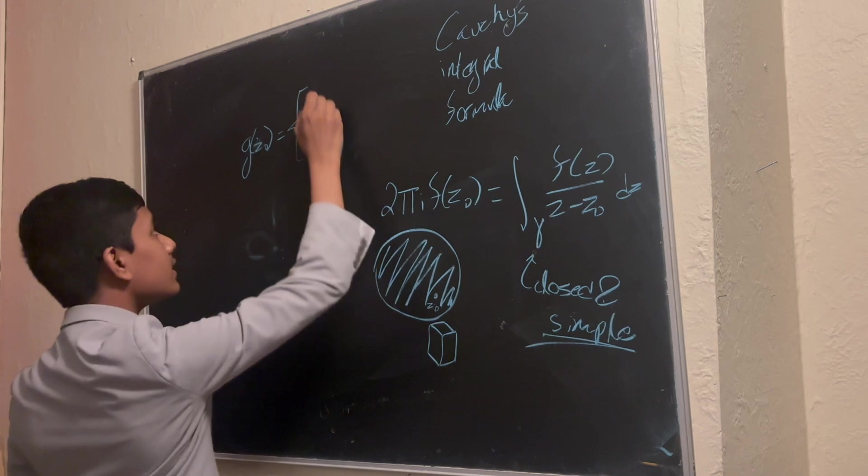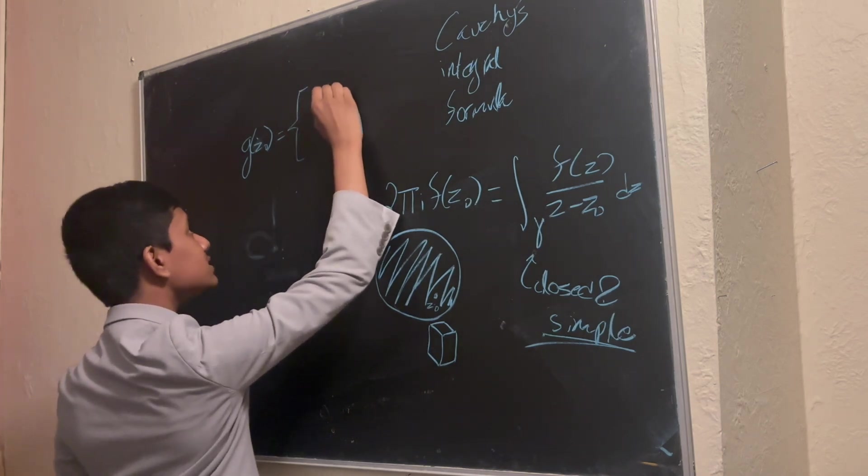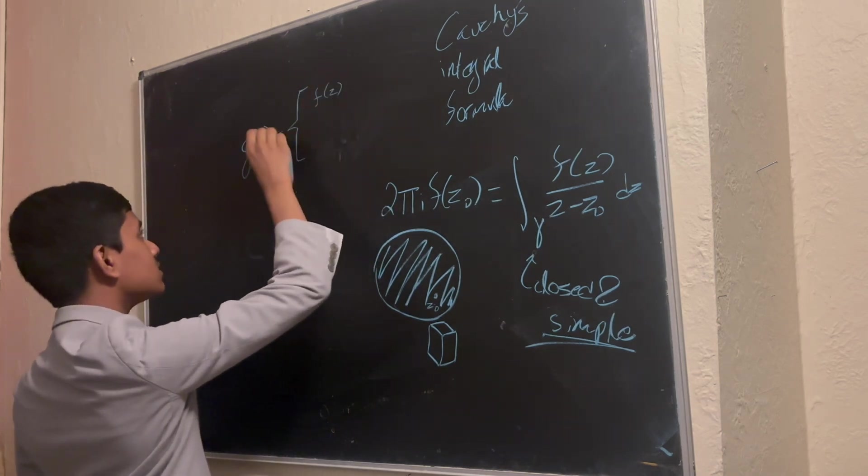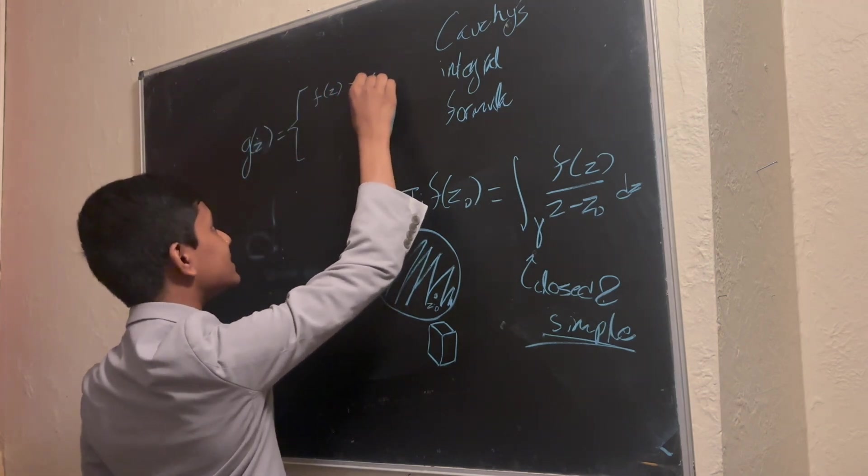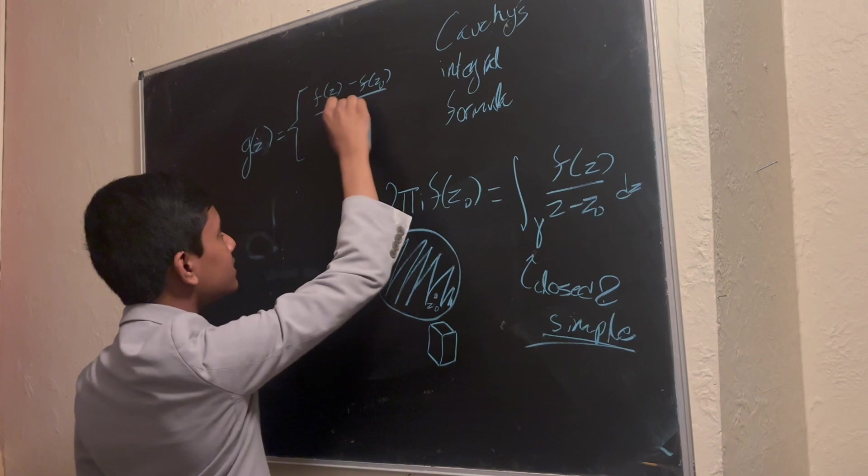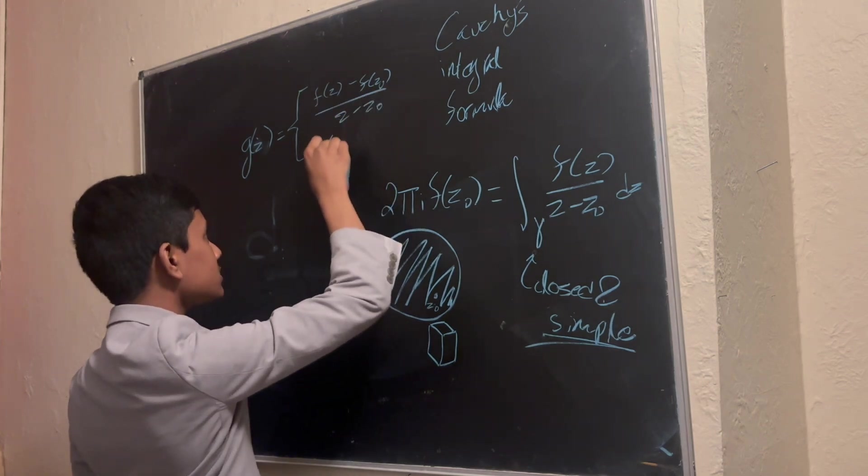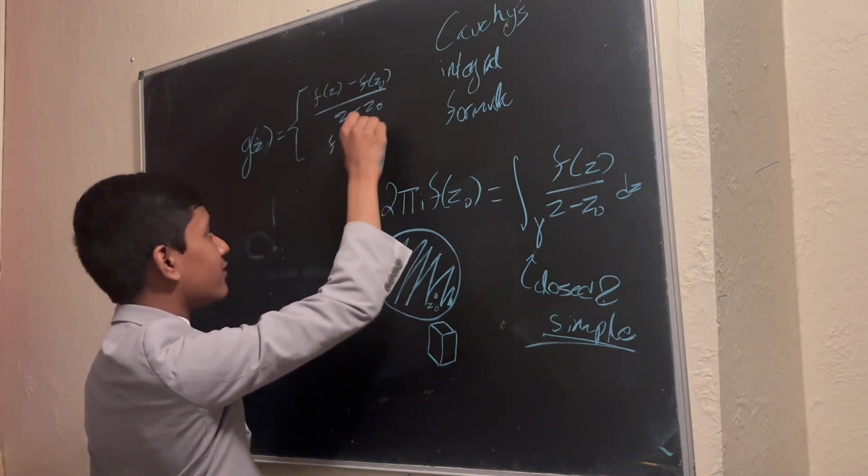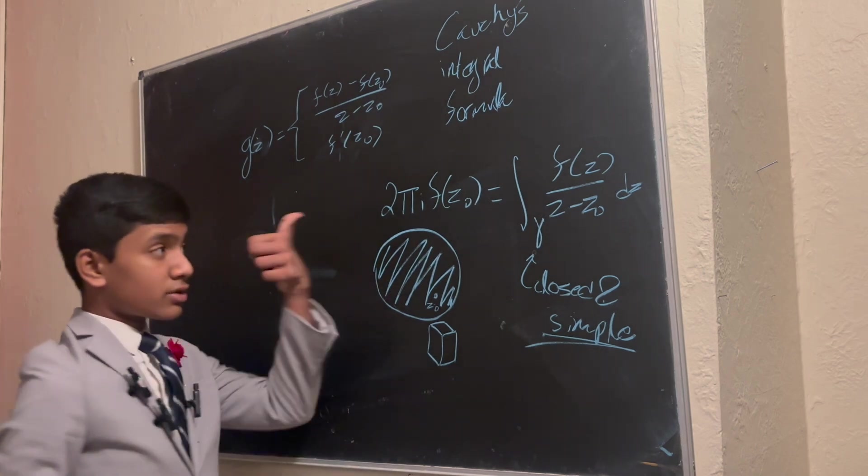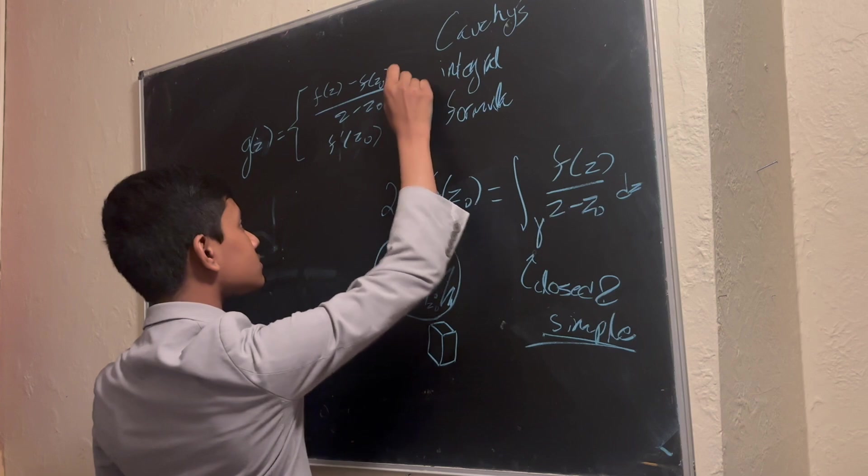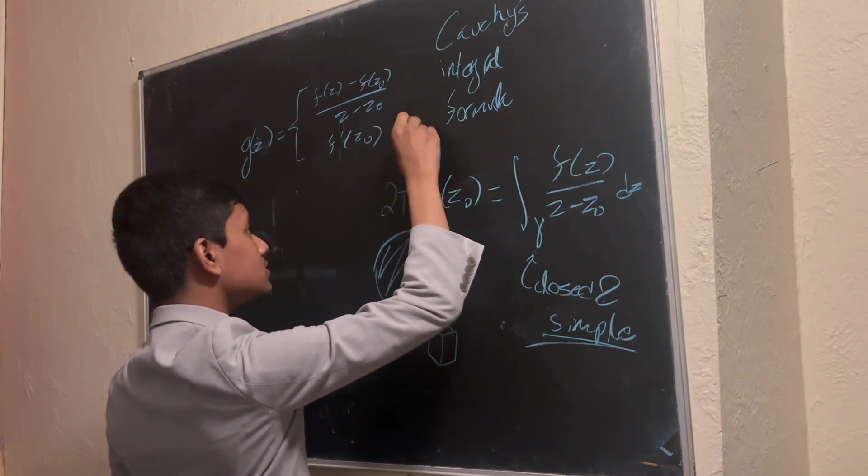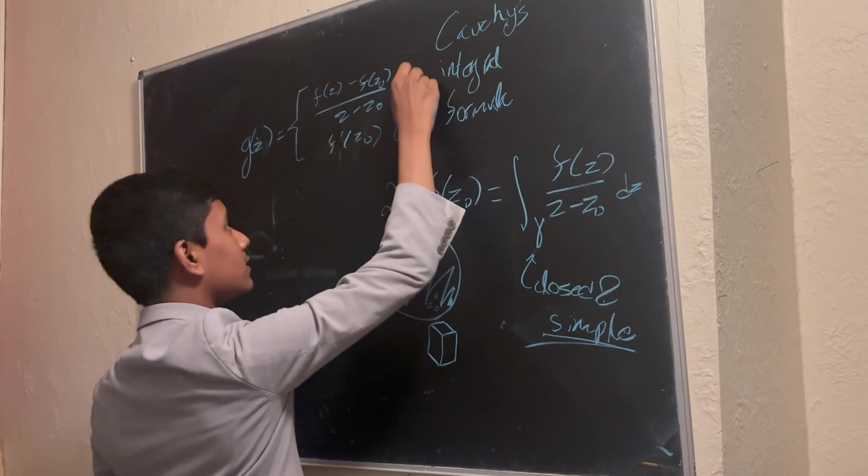It's sometimes equal to f of z minus f of z0 over z minus z0, and sometimes equal to f prime of z0. So, this only works if f is holomorphic at z0 and everywhere else.